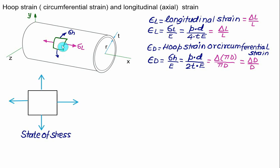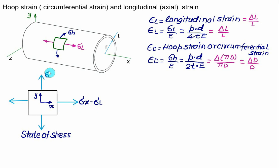This state of stress is represented with the horizontal X-axis, vertical Y-axis, and Z-axis perpendicular to the plane. On the X-axis we have the longitudinal stress: sigma-X equals sigma-L. On the Y-axis we have the hoop stress: sigma-Y equals sigma-H. The pressure acts in the Z direction but is negligible, so the stress along Z is taken as zero.